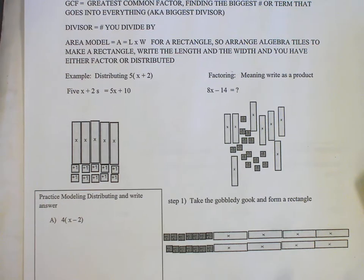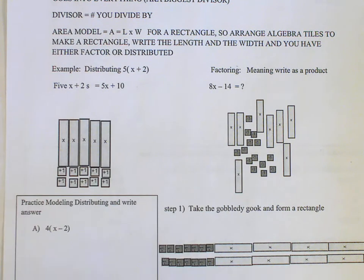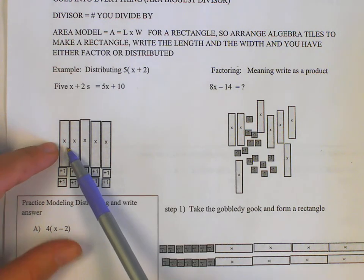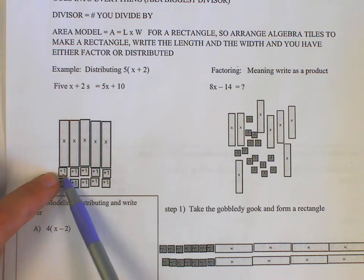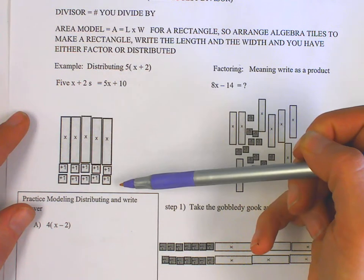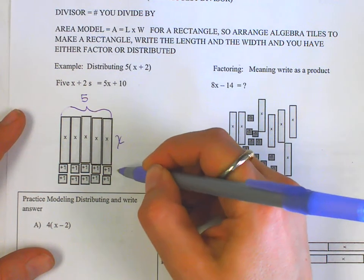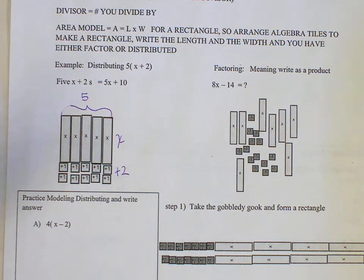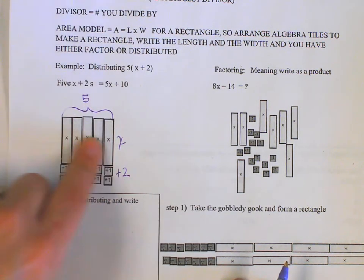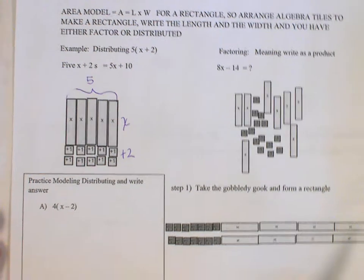Let's go back and review distributing. I have five groups of the quantity x plus 2. To be visual about it I'll use algebra tiles — this block is my x block and these are my one blocks. I have five groups, and in each group is an x plus 2. This is an area model: the length five times the width x plus 2 makes my area, which is five x's and ten ones. This is the distributive property.